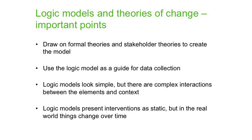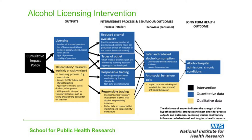What you can see in front of you is a simple logic model that we've produced for an evaluation of our own. It's an alcohol licensing intervention called cumulative impact policy. The idea is really to show how we've mapped out its theory of change and what kind of decisions we've made about the evaluation as a result of that mapping.